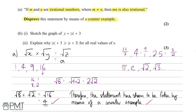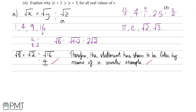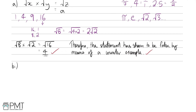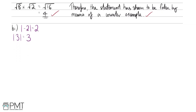Now let's move on to part B. We need to sketch the graph of y equals mod of x plus 3. The modulus function takes any negative number and turns it positive while keeping the same magnitude. For example, the modulus of minus 2 is just 2, and the modulus of 3 stays as 3. For positive numbers, it does nothing.